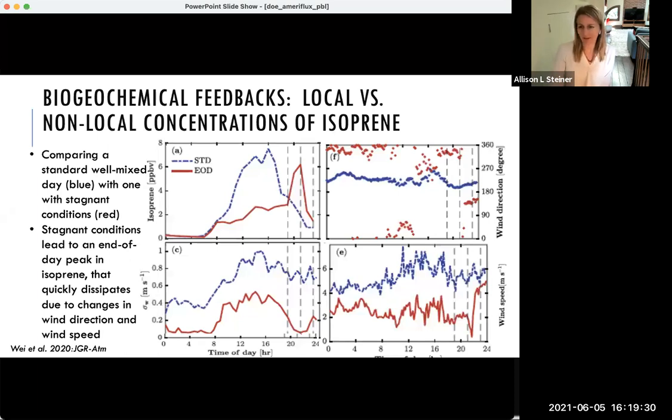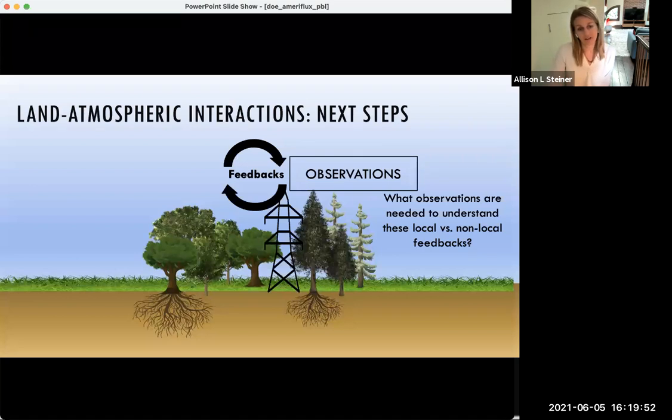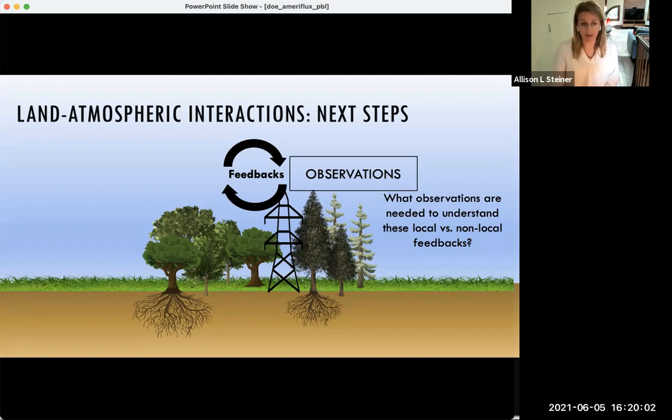Why does this local versus non-local representation matter? From the site perspective, it's important to think about driving conditions for land-atmosphere feedbacks and recognize and be able to clearly identify what might be driven by local interactions as well as remote influences. I offer this perspective as one way we can interpret remote feedbacks versus a local versus a non-local perspective.